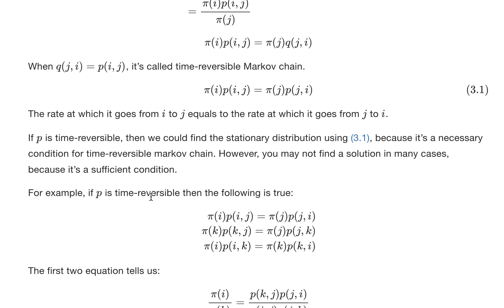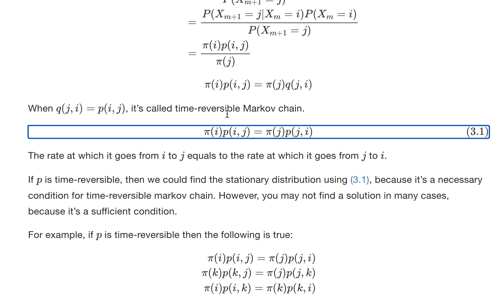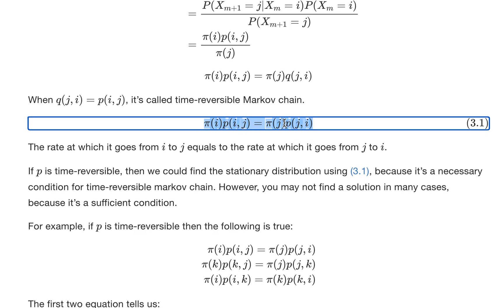The time-reversible Markov chain gives us a useful idea: given a Markov chain with transition matrix p, we can use this equation to find the stationary distribution π. In many cases, this is computationally easy. However, in many cases there's no solution — the Markov chain is not time-reversible. So we know this is a necessary condition for time-reversibility, but not a sufficient condition.